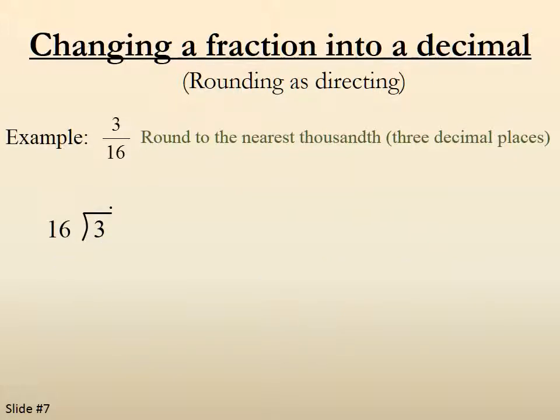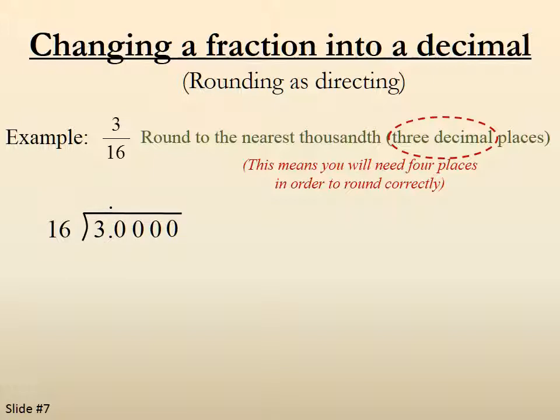Let's try 3 sixteenths. Round to the nearest thousandth. That's 3 decimal places. We're going to need 4 in our work.